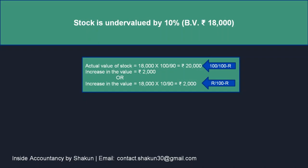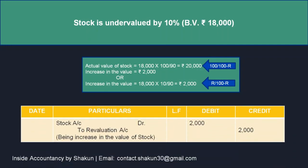Since this is an increase in the value of stock, and stock is an asset, an increase in an asset means it has a debit balance. Therefore our entry will be: Stock Account Dr 2,000 to Revaluation Account.